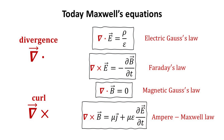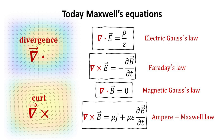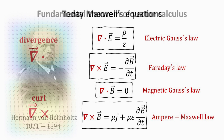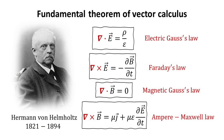Heaviside's version of the Maxwell equations helps express the electromagnetic fields in a more understandable form through the divergences and curls of the electric and magnetic fields. These vector operators are intuitive because they provide a way to visualize the character of the vector field. The divergence and curl tell us how much the vector field is diverging and rotating. It turns out that writing the vector field in terms of its divergence and curl also has a solid mathematical foundation, and we owe it to Hermann von Helmholtz for this insight.